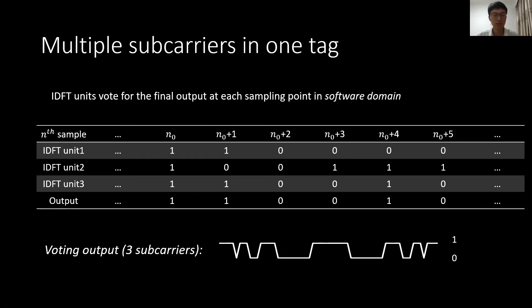Now with the IDFT module, let's see how to achieve multi-subcarrier modulation in one tag. We embed multiple IDFT units in the digital domain. Since the output is still binary, we vote for the final result: if there are more ones than zeros, the output will be 1, and vice versa. The resulting output of three subcarriers is shown as an example. If this code is applied to the ON/OFF switch, the tag will simultaneously achieve frequency shifts of three data subcarriers with independent payloads.